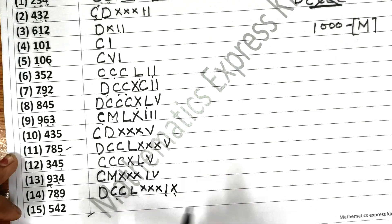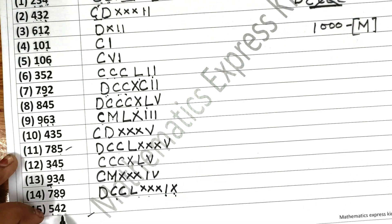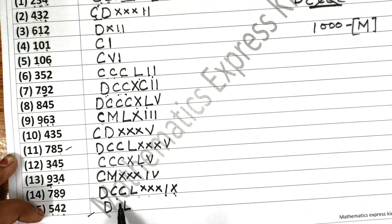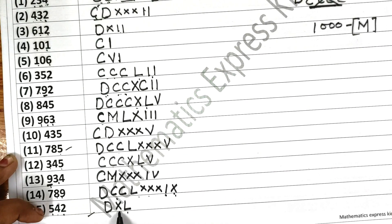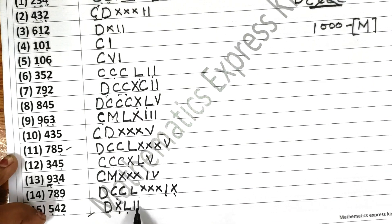Now the next one is 542. So 500 is D. And 40 is XL — 50 minus 10 is 40. Then 2 as II.